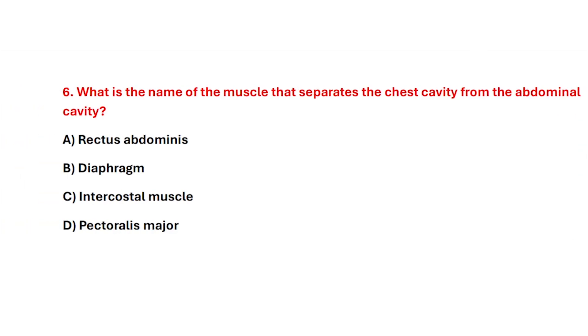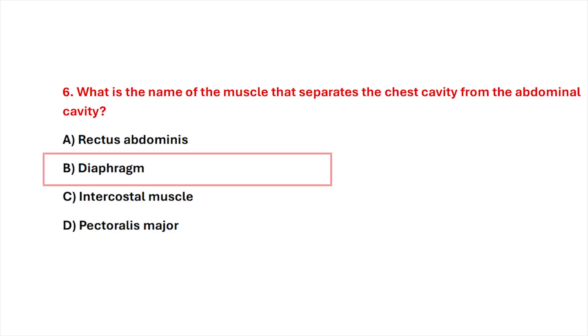Q6. What is the name of the muscle that separates the chest cavity from the abdominal cavity? Correct answer is option B, diaphragm.